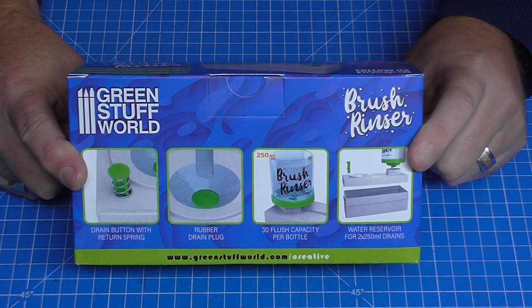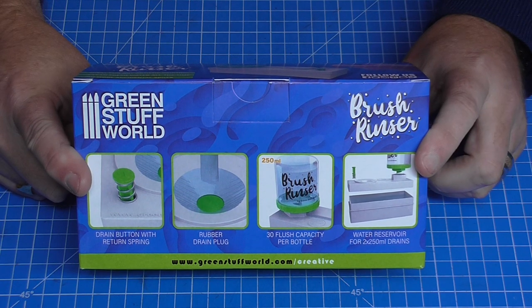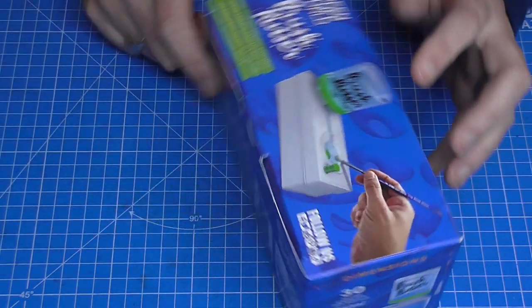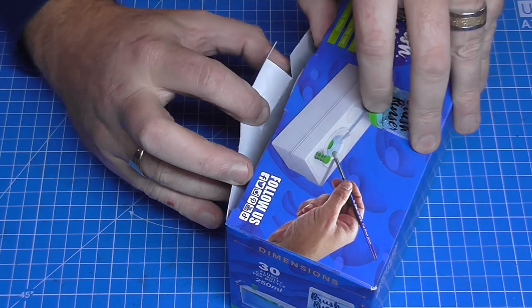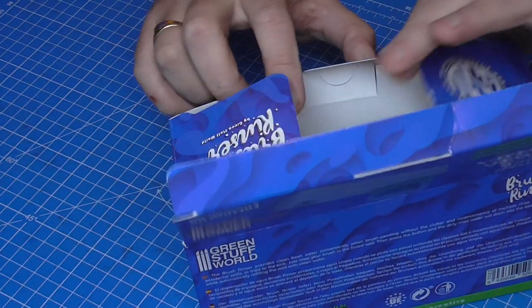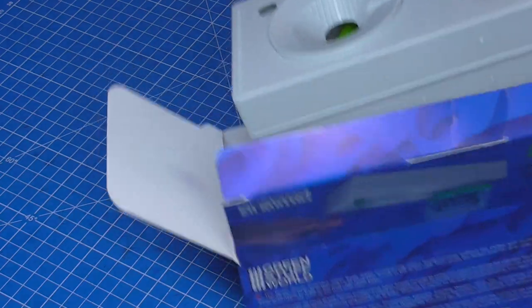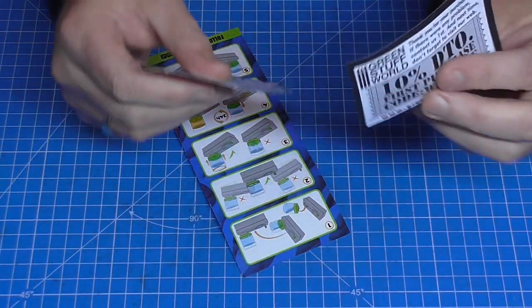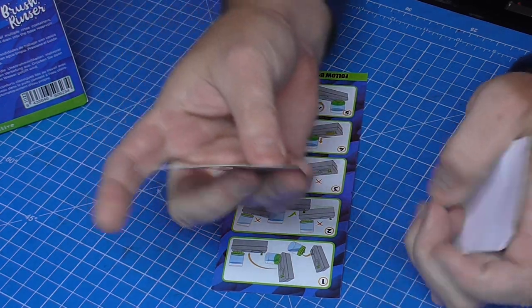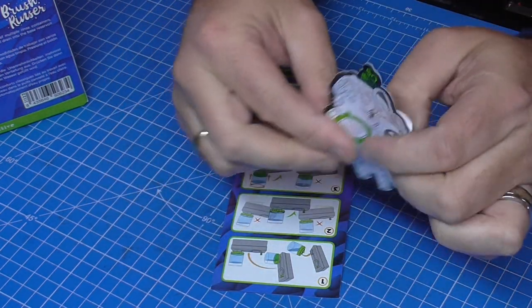Now this is the box it comes in. There is a link in the video description where I actually bought this from, but it leaves a lot to be desired with the instructions. So I've already done a test fit of how this goes together. I took everything out of the box here, I got a 10% off voucher and a nice little sticker from Green Stuff World.